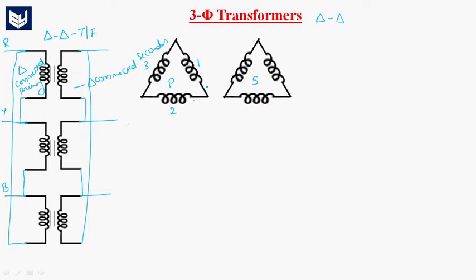What is the main use of delta-delta connection? The main use of delta-delta connection is that it is mainly used for high currents and low voltages. Whenever we require high currents and low voltages, we will go with delta-delta connection.